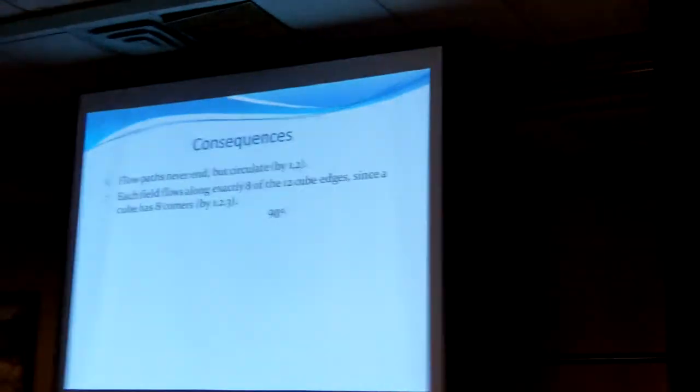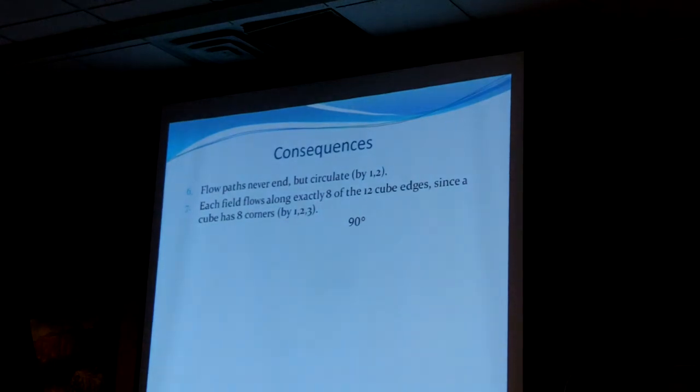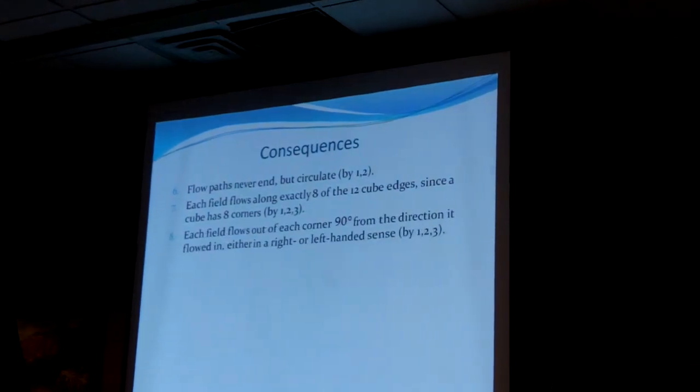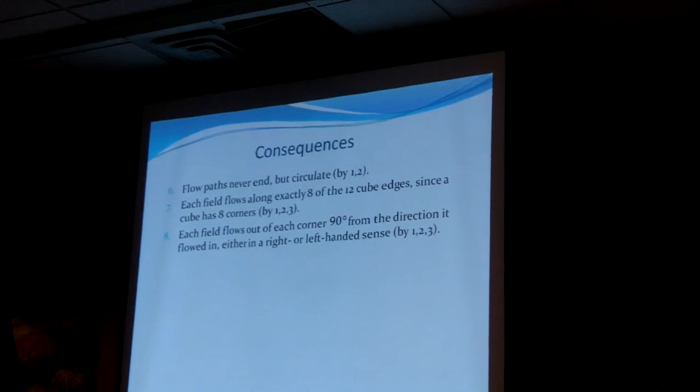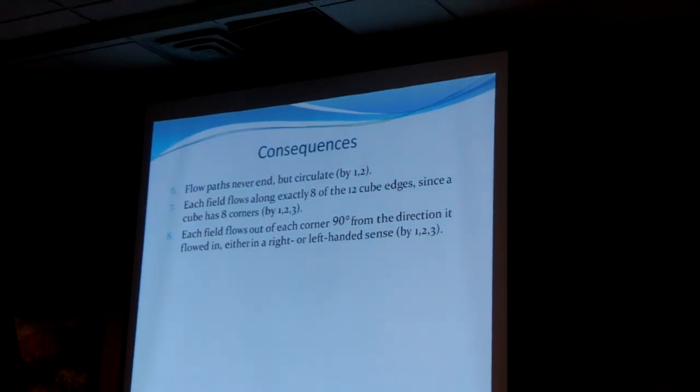Here are some consequences: the flows never end, they have to circulate. Each flow has to go through exactly eight edges because there are eight corners and it goes from corner to corner eight times, ending up back where it started — there are 12 edges but each field only goes through eight of them. Each field flows out of each corner at 90 degrees, and it's going to go 90 degrees either in a right-handed or a left-handed sense.